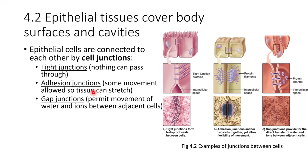Adhesion junctions are the next cell junction type. They allow for some flexibility — two adjacent cells are connected by protein filaments reaching across and anchoring them together, but with some flexibility. This is really important for tissues that need to be able to stretch; without flexibility, that would cause a problem.